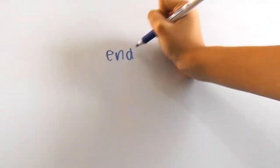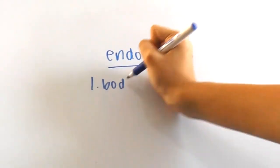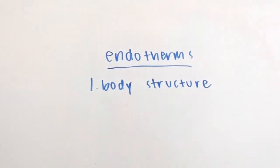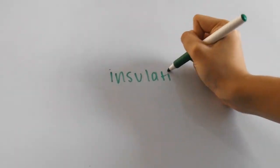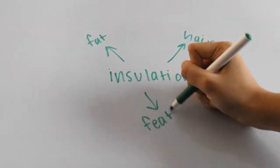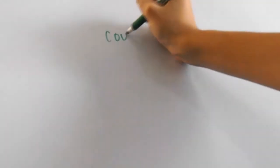There are plenty of ways endotherms can regulate their own body temperatures. One way is simply their body structure. In insulation, layers of fat, hair, or feathers can insulate the organism and trap heat in.